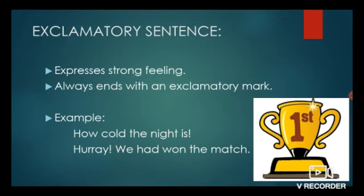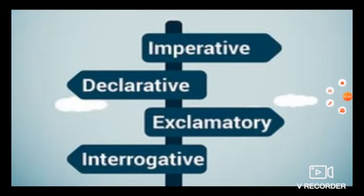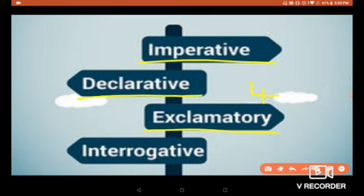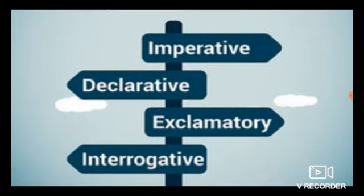Now let's have a short summary. A group of words which makes complete sense is called a sentence. There are four kinds of sentences: imperative sentence, declarative sentence, exclamatory sentence, and interrogative sentence. An imperative sentence expresses a command or request. A declarative sentence gives information. An exclamatory sentence expresses strong feeling. An interrogative sentence asks a question and ends with a question mark.